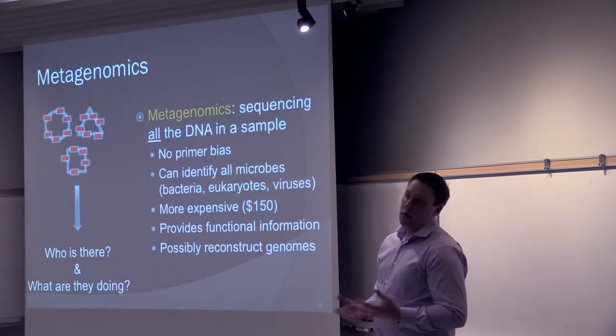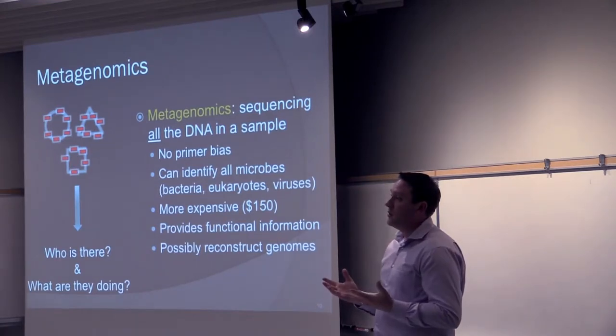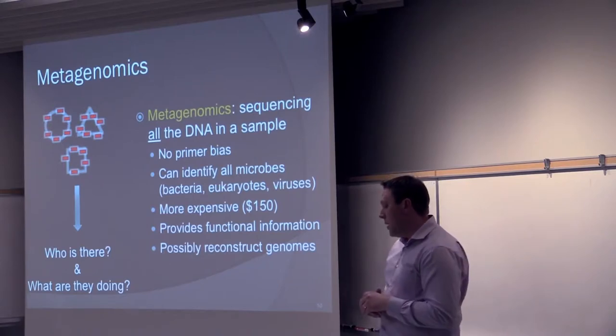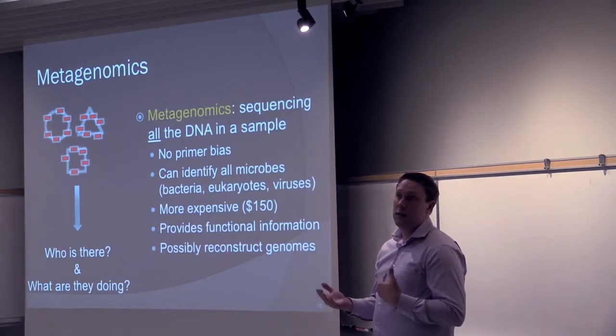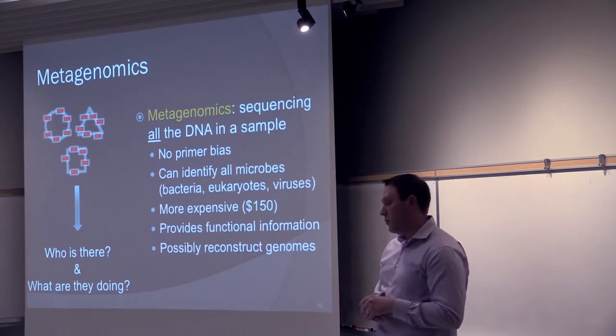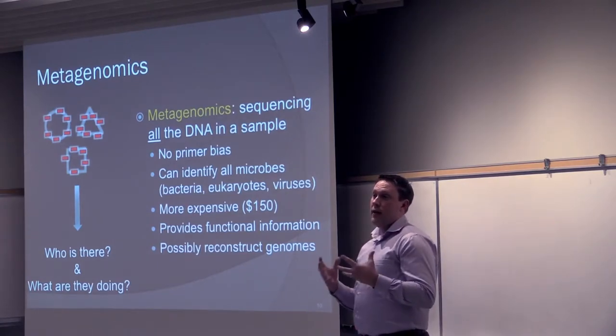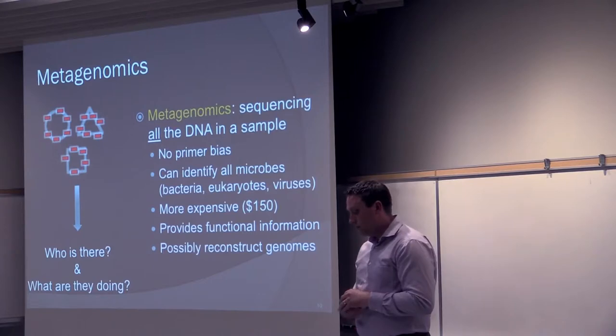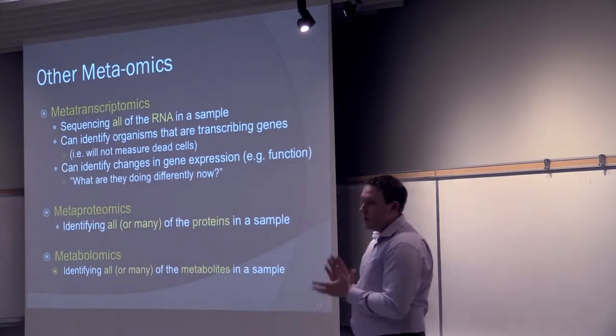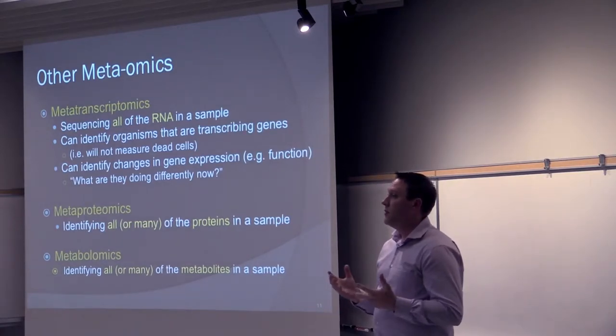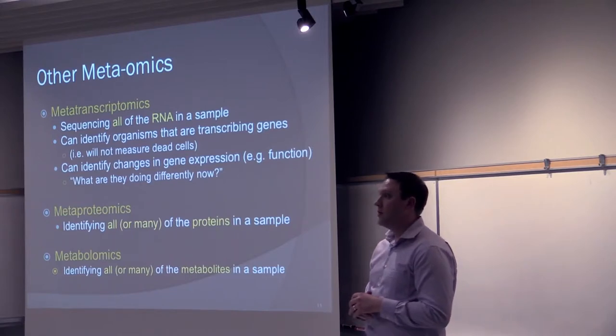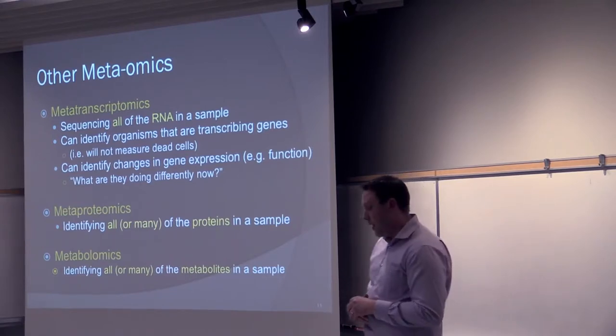And then the other broad approach is what's called shotgun metagenomics. And so that's just where we're sequencing all the DNA in the sample. And so the nice thing about that is we don't have to worry about primer bias, where we might be only amplifying certain bacteria more than others, even though they're supposedly universal. And then also that we can identify all microbes, not just bacteria that we're targeting, but viruses, eukaryotes, anything that's in the sample. And then the biggest other thing is that you get information not just about what taxa are there, but also what functions those microbes are doing. So what genes are there and function, what are those things doing? And you can also sometimes reconstruct genomes or microbial genomes directly from these metagenomes.